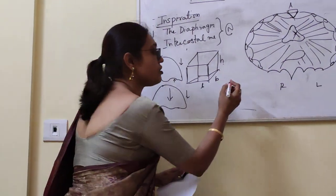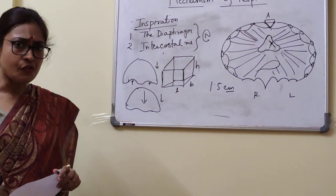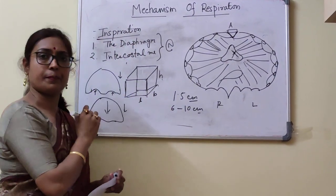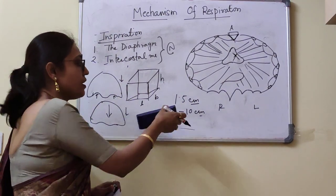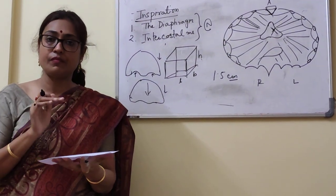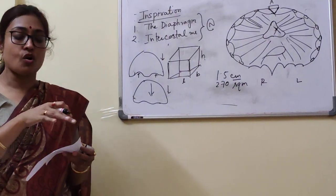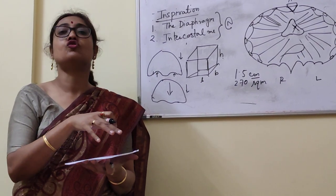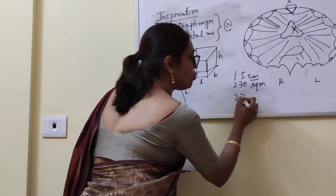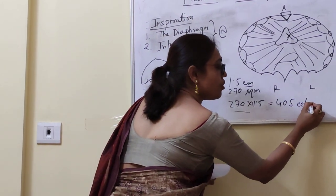Assuming in normal conditions the diaphragm descends 1.5 centimetres, and the area of the diaphragm is about 270 square centimetres, the amount of air drawn into the thoracic cavity due to 1.5 cm descent of the diaphragm is 270 × 1.5 = 405 cc or 405 mL.